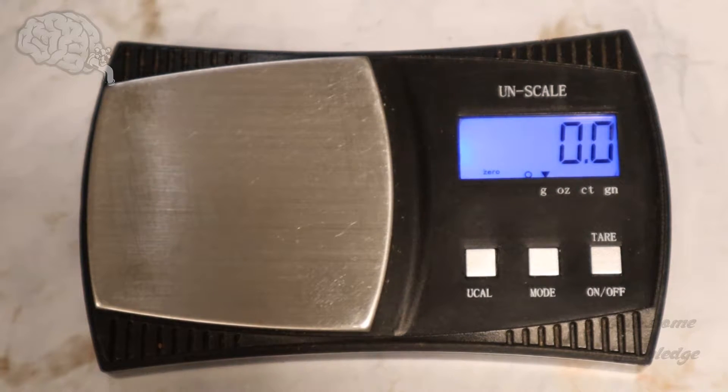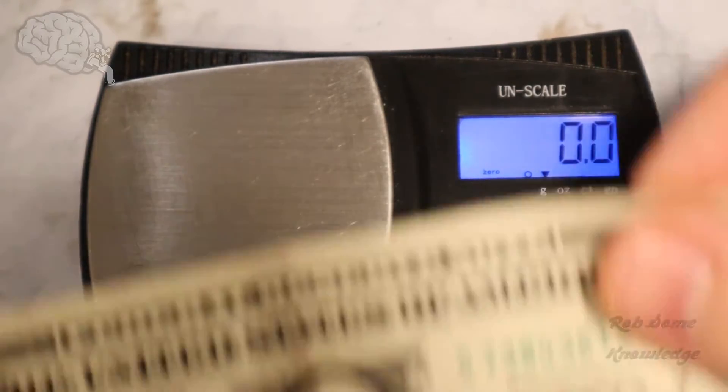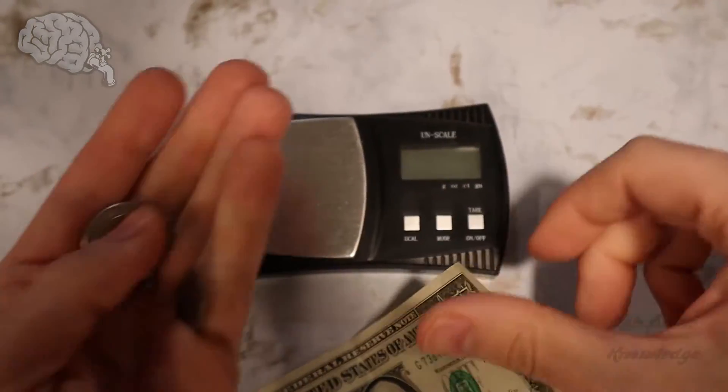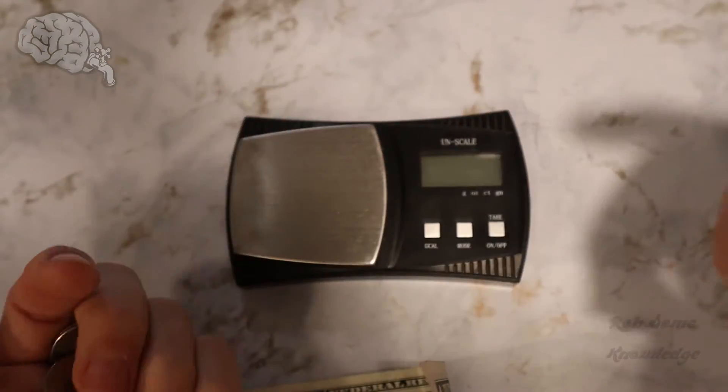So the accuracy can be pretty important especially when you're buying jewelry or other valuable substances and we're gonna make sure that our scales are in tip-top shape and weighing accurately. So for this we're actually going to just use some US currency. So there's a couple things we can use. We can use a dollar bill. We can use any of the coins really.